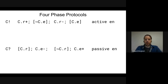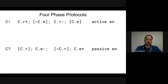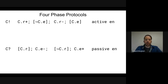So far we have really only talked about one particular four-phase protocol — the active enable and passive enable protocols. In this protocol, the sender raises the request rail, the receiver lowers the enable, the sender lowers the request, and the receiver raises the enable.